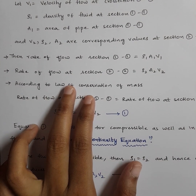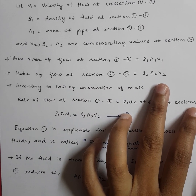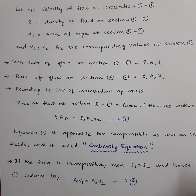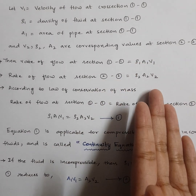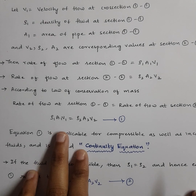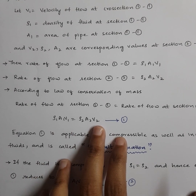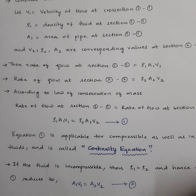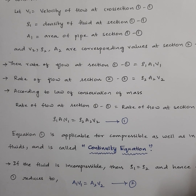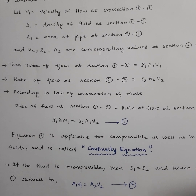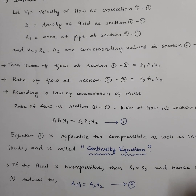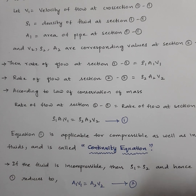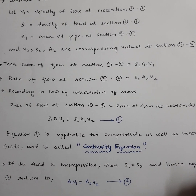Similarly, the mass of fluid leaving per second equals rho 2, A2, V2. Since the continuity equation is based on the law of conservation of mass, mass entering equals mass leaving, so rho 1 A1 V1 equals rho 2 A2 V2. This is the continuity equation, and it is applicable for both compressible and incompressible flows. In compressible flow, density is not constant and varies, so rho 1 and rho 2 are different.